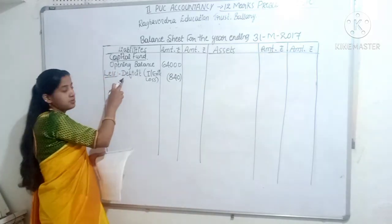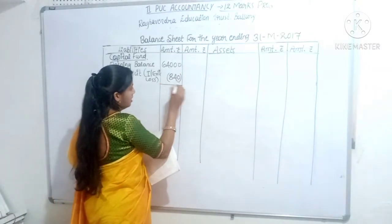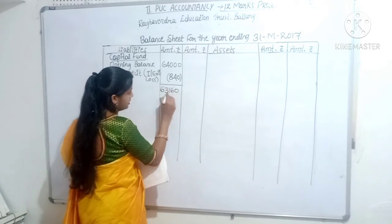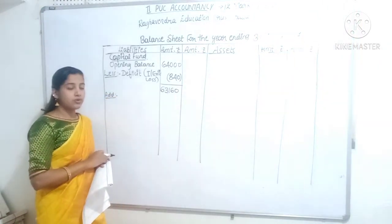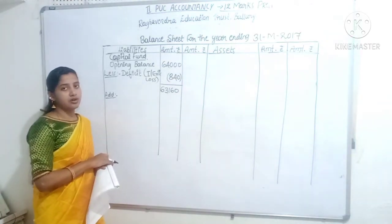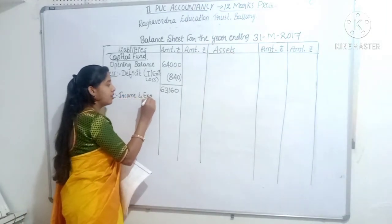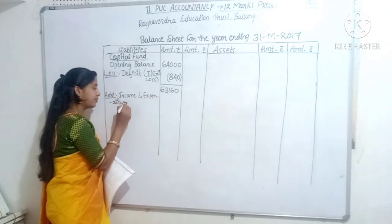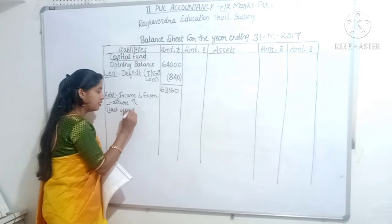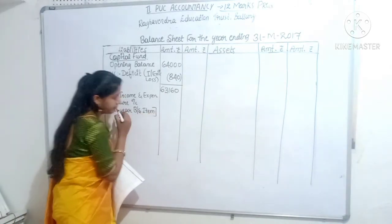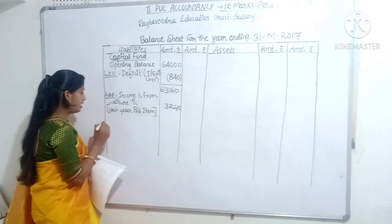The deficit should be deducted: 64,000 minus 840 gives remaining balance amount Rs. 63,160. Then add: last year balance sheet income and expenditure account item - profit amount Rs. 3,240 is added to the capital fund.